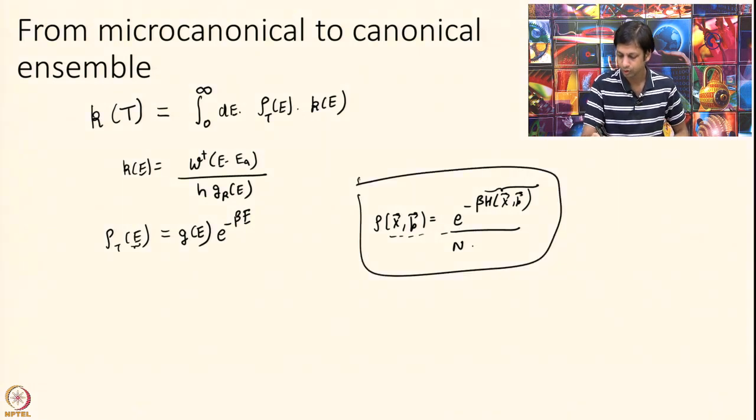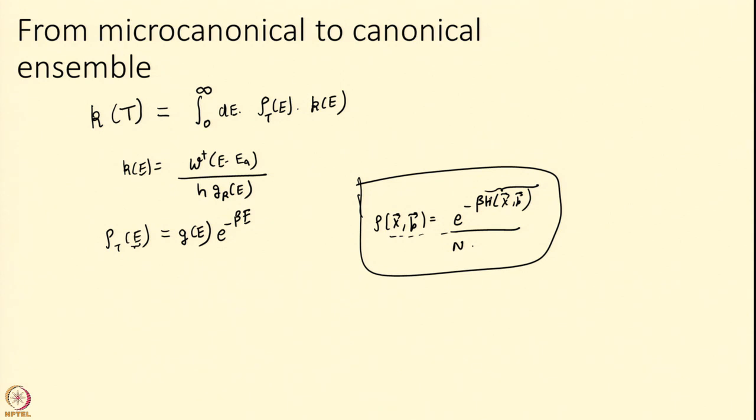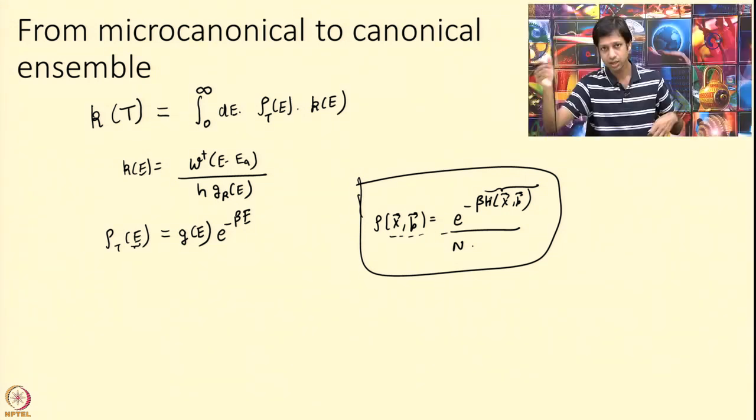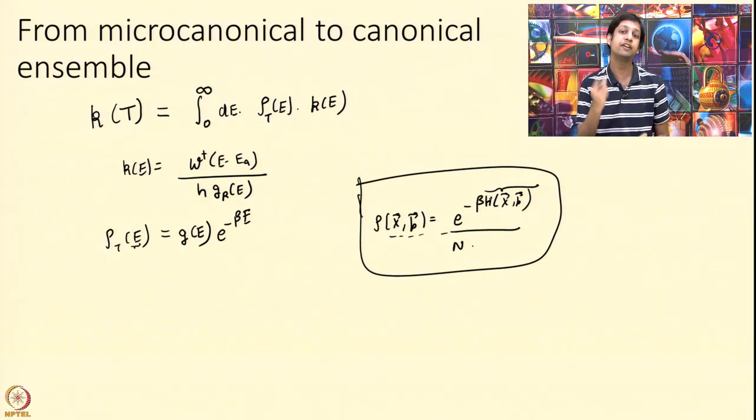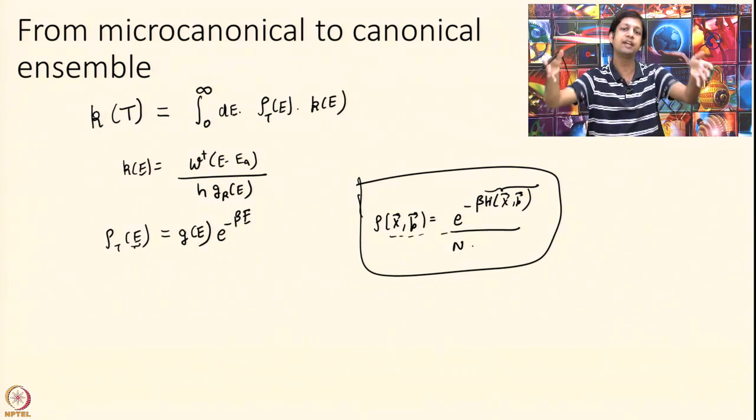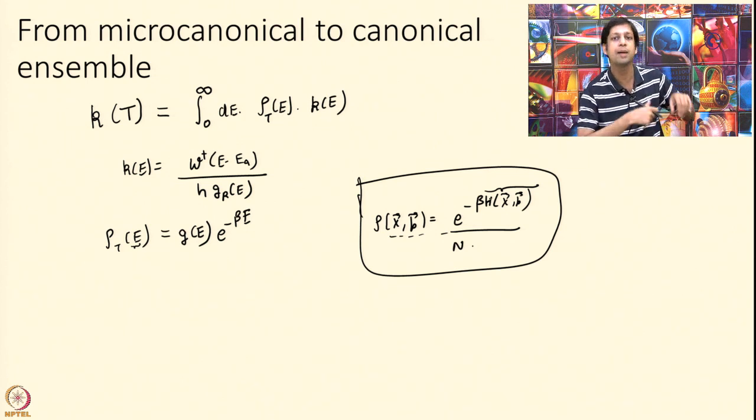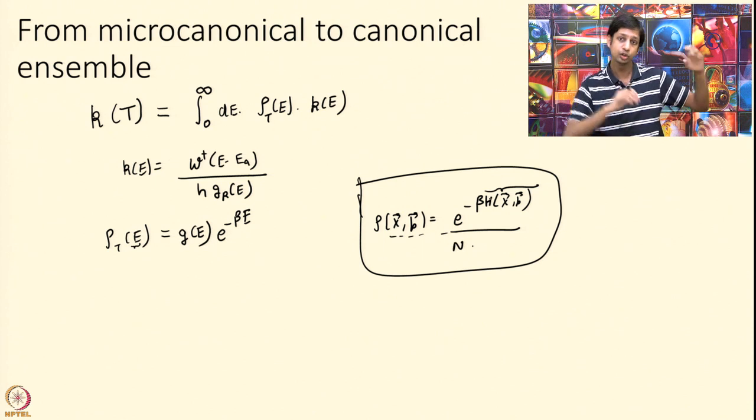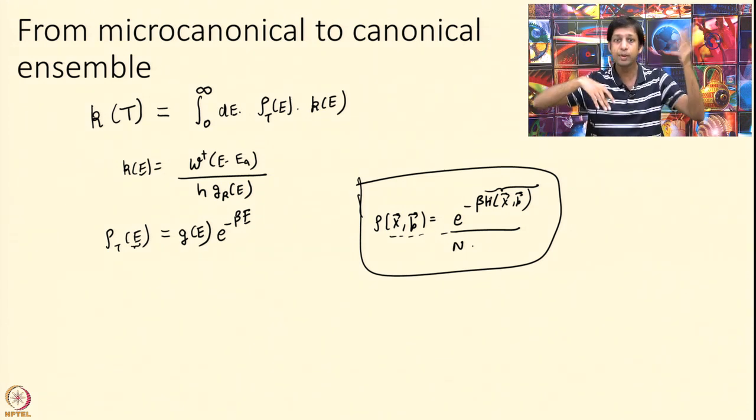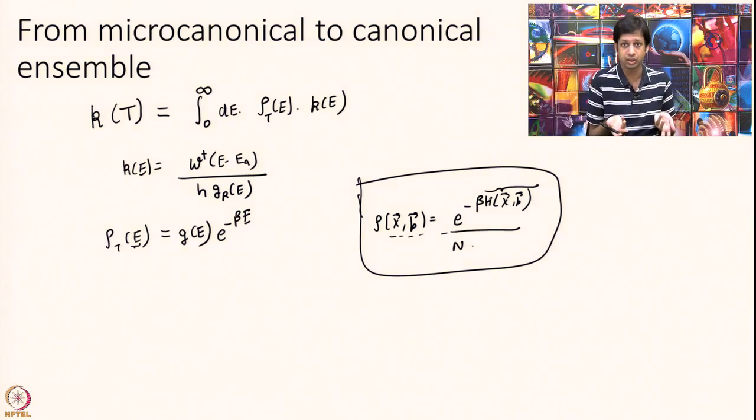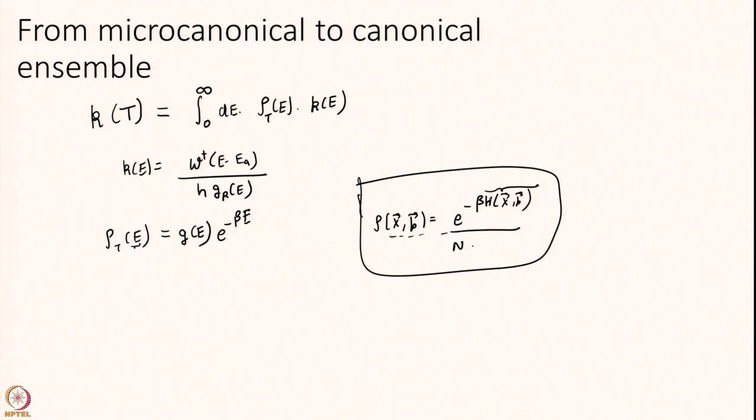However, there can be degeneracy of energy, and the density is given by G. At a given energy what is my rho? The density at X comma P is this, the true Boltzmann distribution, and H is nothing but energy. But rho of E is e to the power of minus beta E, but I have several possible X comma P where the energy is equal. I must multiply by the density at that given energy or the number of states I have at that energy.